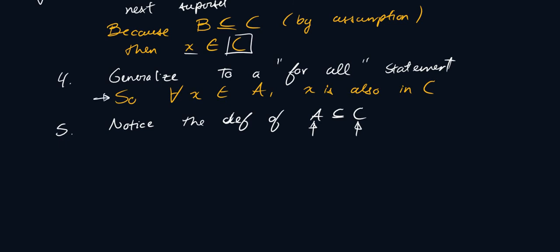And that's exactly what I've shown in this line. I've said that for all X in A, X is also in C or epsilon C. Meaning that I can write hence, A is a subset of C.